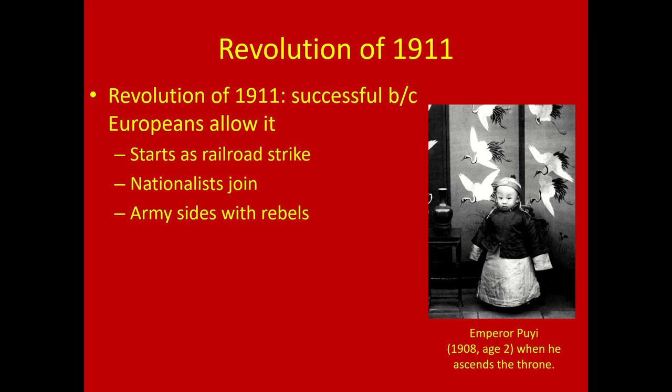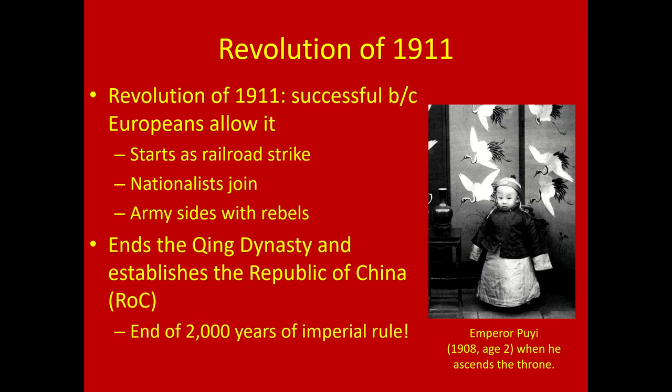So the Europeans decide: we're going to let this rebellion succeed, run the emperor out, and help prop up a new government that we can also try to make into a puppet. This ends the Qing dynasty and establishes the Republic of China — the end of two thousand years of imperial rule.